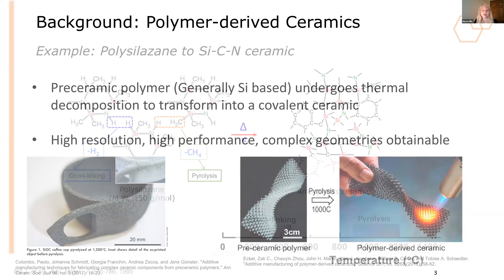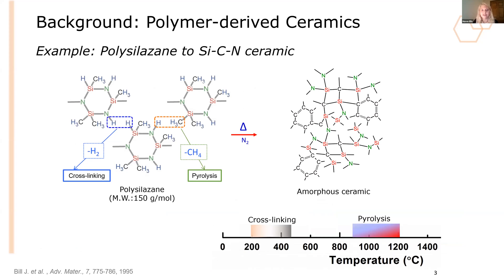To better explain this, we have an example of polysilazane to SiCN. On the left, we can see the polysilazane chemical structure in a monomer or oligomer form. It must undergo a cross-linking process at about 200 to 450 degrees Celsius. In this process, hydrogen is released as those bonds break between the hydrogen and the nitrogen, and the hydrogen and the silicon, to then bond to each other and form that cross-linked structure.